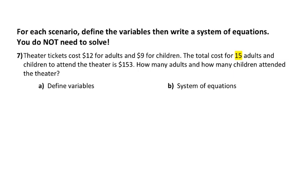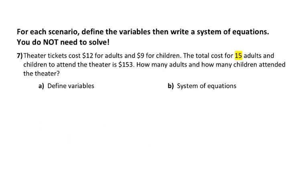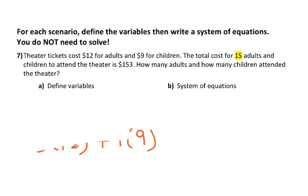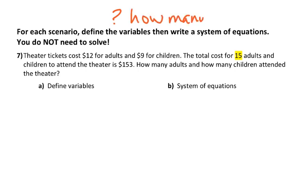Let's read the problem. Theater tickets cost $12 for adults and $9 for children. If you're an adult taking your little sister who is a child, that costs $21. If you have three adults and one child, you do three times 12 and one times 9. What's changing is not the prices — those are fixed. What's changing is how many adults and how many children are going. That's the key question, and it's how you figure out what your variables stand for.